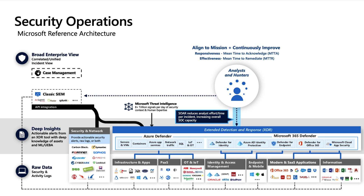The next key element for empowering security operations is adopting security orchestration automation and remediation, or SOAR technologies, and integrating those with other tool sets. This helps reduce manual work for security analysts with seamless experiences. Manual steps take time away from meaningful work and erode analyst morale — they would rather be fighting the bad guys than copying and pasting between tools and consoles. SOAR also speeds up response time because automation happens at machine speed, and allows you to scale security operations to meet the growing volume of attacks across modern multi-cloud hybrid enterprises.